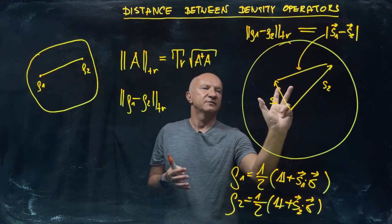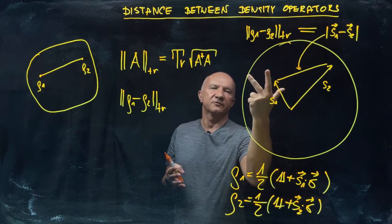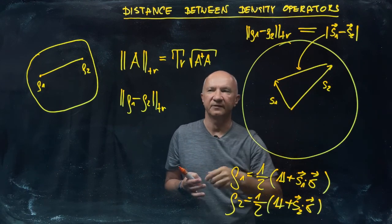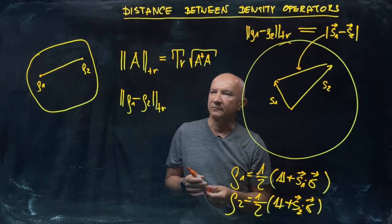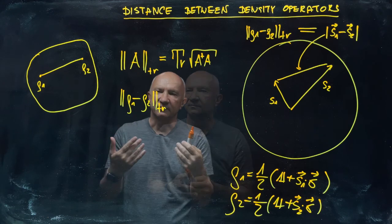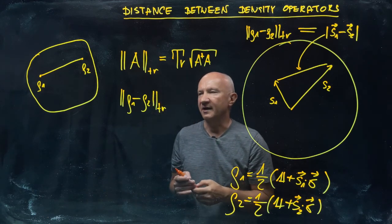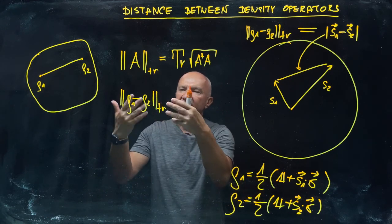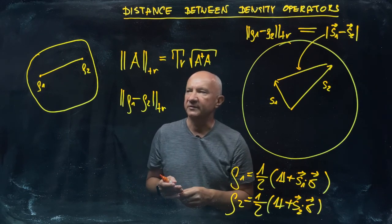Because what the unitary operation does, it rotates the whole Bloch sphere. Those two vectors s₁ and s₂ will just rotate somehow. It's not going to affect the difference between the two. You can see right away that the trace distance is invariant under unitary operations.